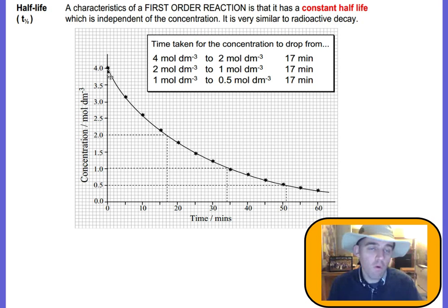We start off with 4 moles per dm³, and when that halves down to 2, we go across and see how long that took. It gives us 17 minutes. The time it takes to halve again from 2 to 1—go across at 1 and down and look at the difference here. This is the next half-life between these two lines. Again, it's 17 minutes. Half of 1 is 0.5, so we go across and down and look at the gap there. It's 17 minutes again. So you see, each one of these gaps represents a half-life.